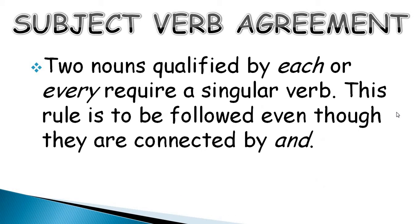Two nouns qualified by each or every require a singular verb. This rule is to be followed even though they are connected by and. So in a sentence if you have each or every, and you are using two nouns as well, then you need to add a singular verb even though you use and to connect those two nouns.